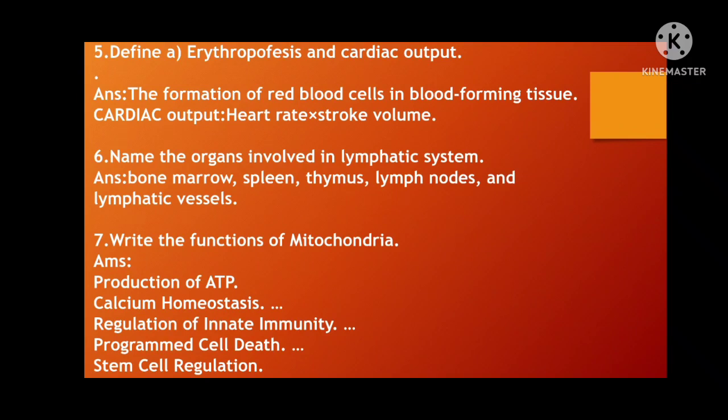Next: Define erythropoiesis and cardiac output. Erythropoiesis means the formation of RBC in the blood-forming tissue — that is, the formation of red blood cells. Cardiac output is the product of heart rate multiplied by stroke volume.